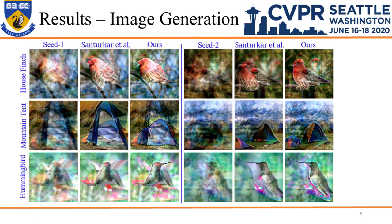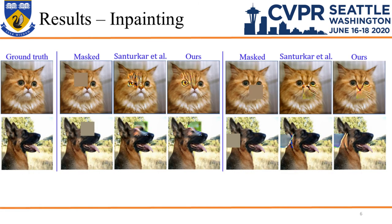Here we show representative results of image generation using our scheme and a related existing work. Clear improvements are visible with our technique. We also extend our technique to perform in-painting with robust classifiers. The result demonstrates realistic filling of regions as compared to the existing method.